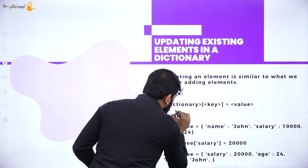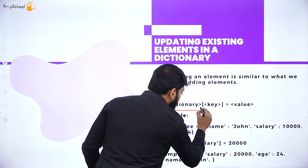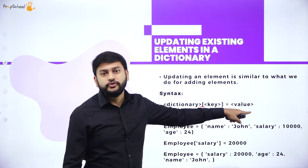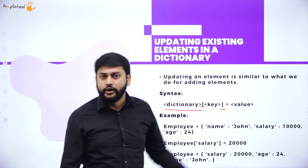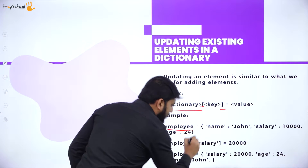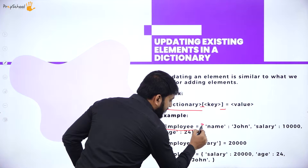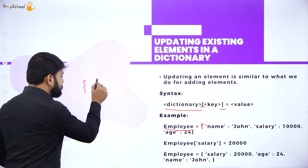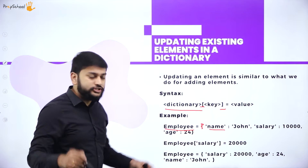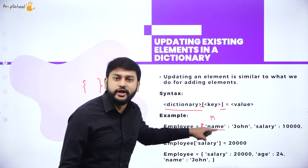Let's start with updating existing content. The syntax is: dictionary name, then square brackets, then the key, then equals the new value. For example, 'employee' is our dictionary name, with the opening flower bracket. 'Name' in quotes is the key, followed by a colon, then the value. This is one key-value pair.